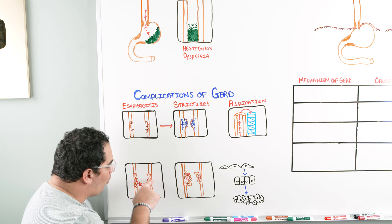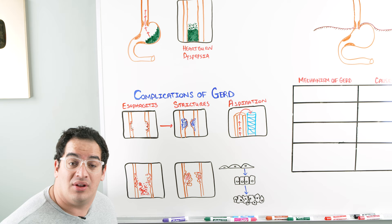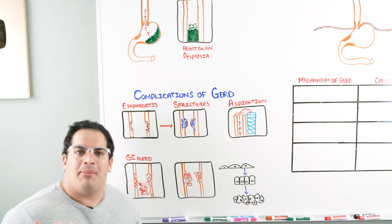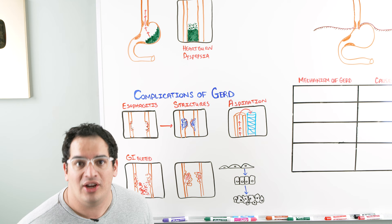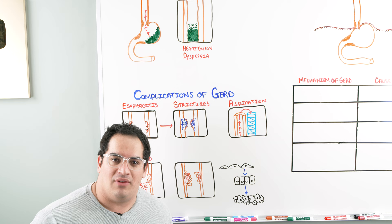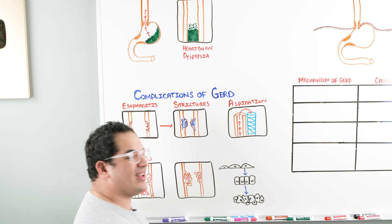If you erode and ulcerate the esophagus, you can erode into blood vessels and cause GI bleeding. GI bleeds can present with anemia as a lab finding or fatigue. The last and scariest complication of chronic gastroesophageal reflux disease is an increased risk of esophageal cancer.